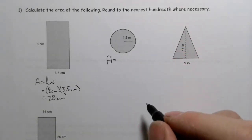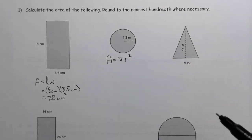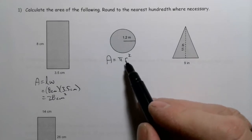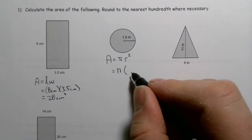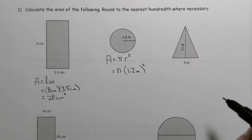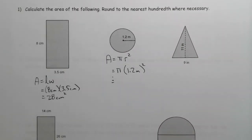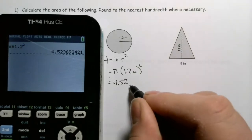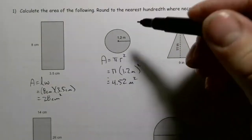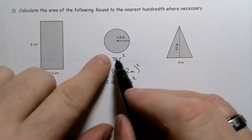For a circle, the area formula is pi multiplied by the radius squared. It's important to remember how squaring works with substitution. We put the radius in parentheses: pi times (1.2 meters) squared. Using the pi button on your calculator, that gives approximately 4.52 square meters to cover that circular area.